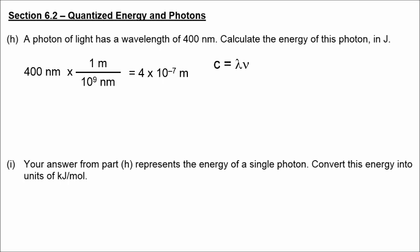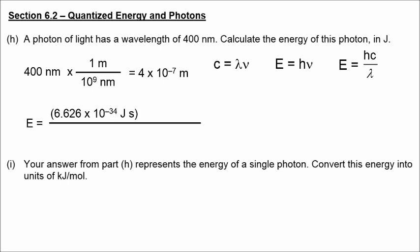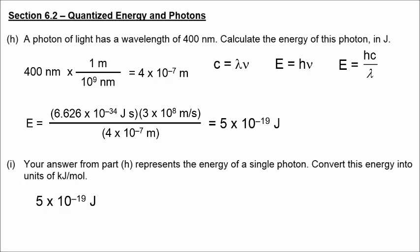We have an equation relating wavelength and frequency, and one relating energy and frequency. Combining them: since frequency equals speed of light divided by wavelength, energy equals H times C divided by wavelength. Plugging in Planck's constant, the speed of light, and the wavelength of 4 times 10 to the negative 7 meters, our answer comes out in joules: 5 times 10 to the negative 19 joules. This represents the energy of a single photon.